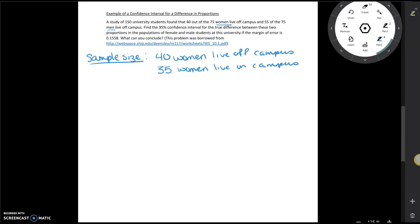And from the men we find that 55 of the 75 men live off campus. So 55 men live off campus. And so if 55 out of the 75 live off that means that 20 men live on campus. So notice that the counts are all greater than 10. So the sample size requirement is met.